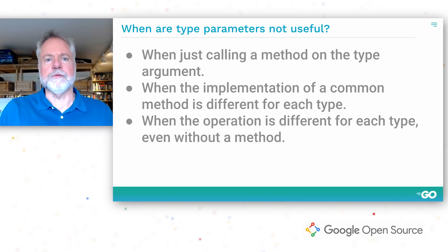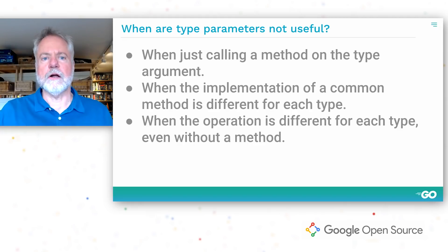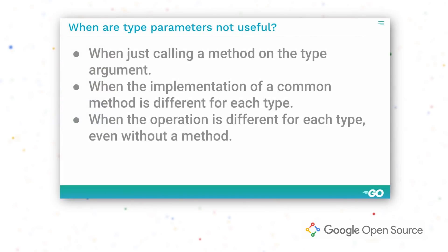Go also has reflection, which permits a kind of generic programming in that it allows you to write code that works with any type. If some operation has to support types that don't have methods — so interface types don't help — and if the operation is different for each type, use reflection. An example is the encoding/json package. We don't want to require every type to support a MarshalJSON method, so we can't use interface types. But encoding an integer type is nothing like encoding a struct type, so we shouldn't use type parameters. Instead, the package uses reflection.